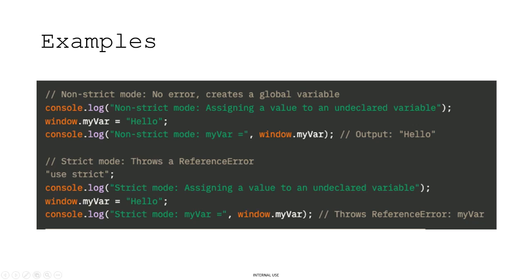In non-strict mode, if you assign a string like 'hello' to a variable — for example window.myvar — without using let, const, or var, it creates a global variable and console.log will print 'hello.' But in strict mode, with 'use strict' at the top, trying to reference that variable throws a reference error, because you didn't use the proper variable declaration keywords let, const, or var.